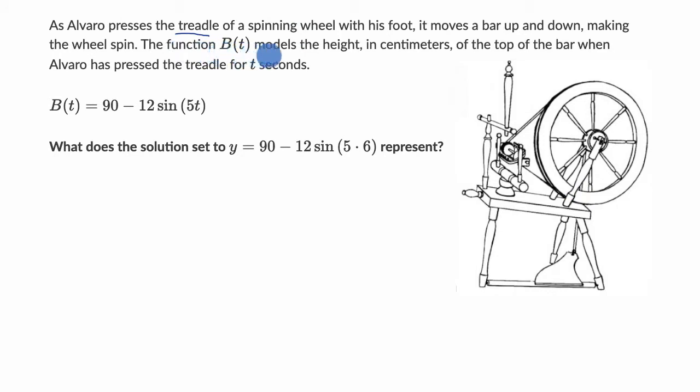The function b(t) models the height in centimeters of the top of the bar when Alvaro has pressed the treadle for t seconds. So it's telling us the height of—I can barely see where the top of the bar is, someplace over here. This isn't exactly what they're probably talking about in this exercise, but this is just to give you a visualization of what a treadle is, what the bar is, and what the spinning wheel is.